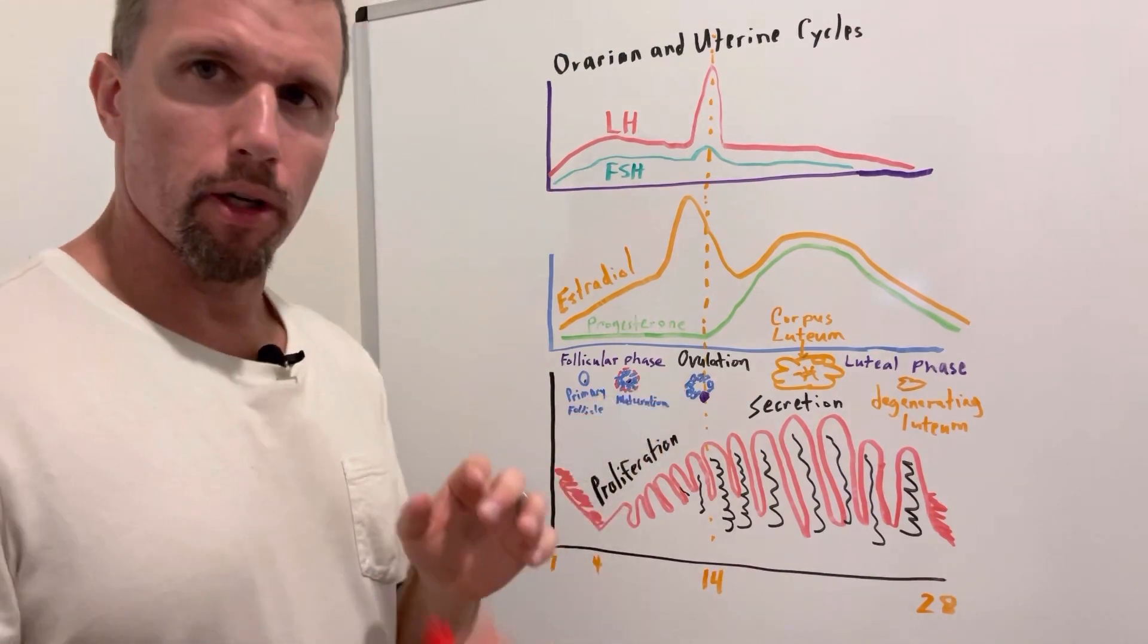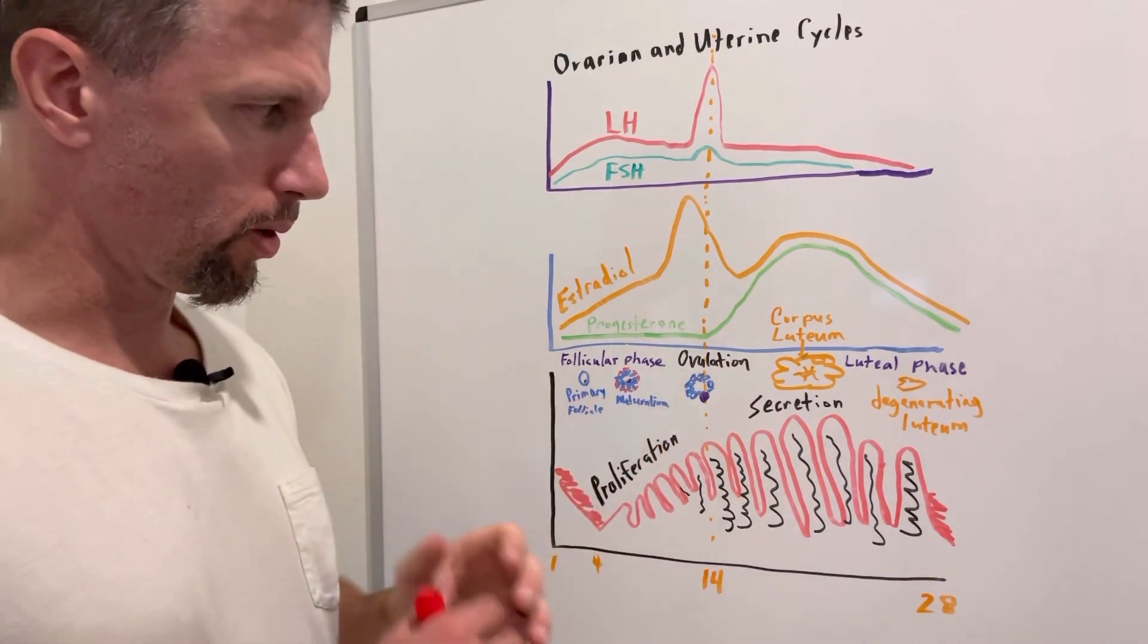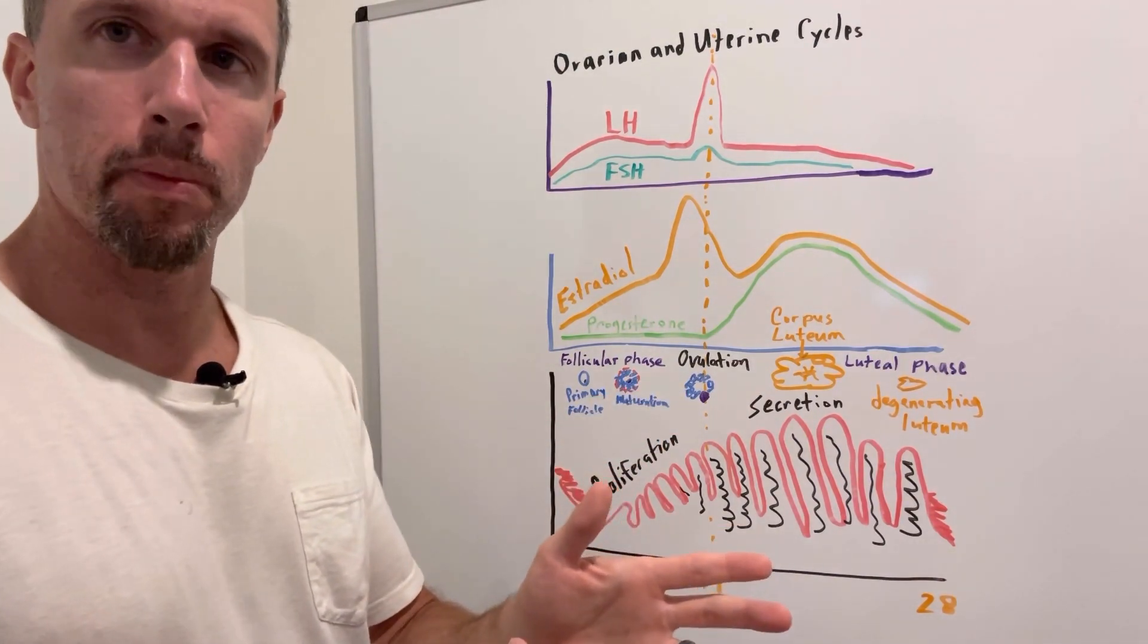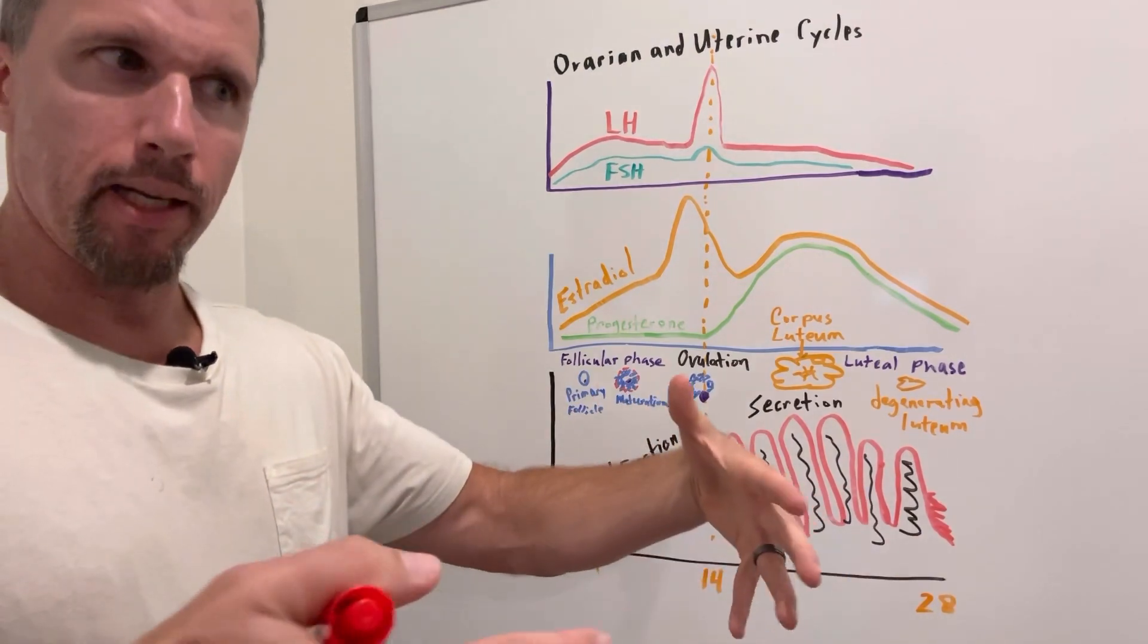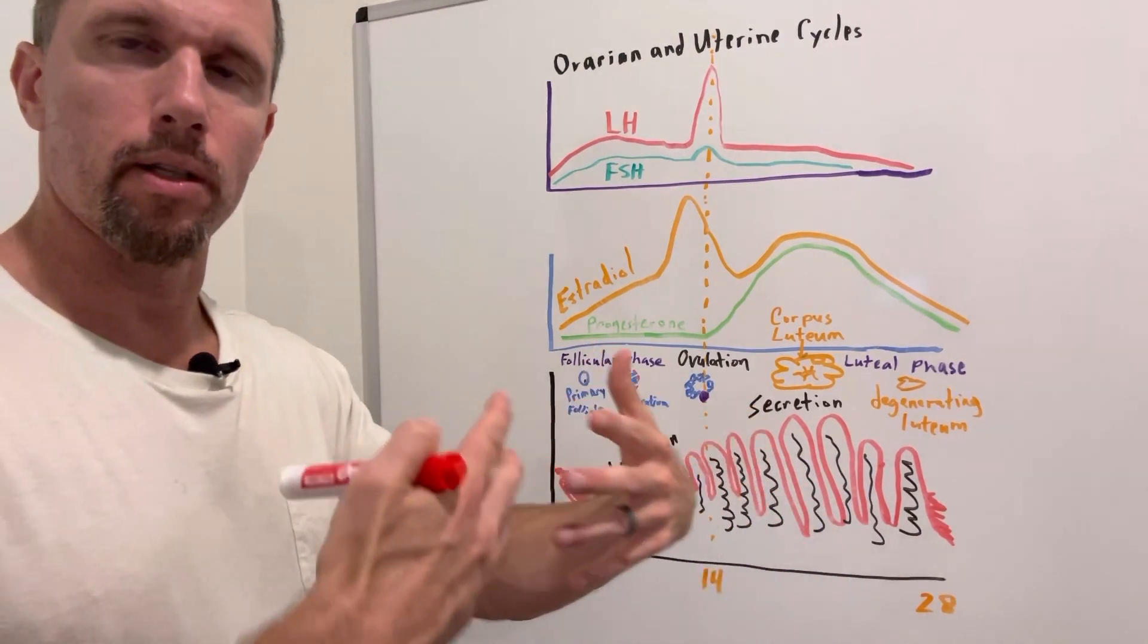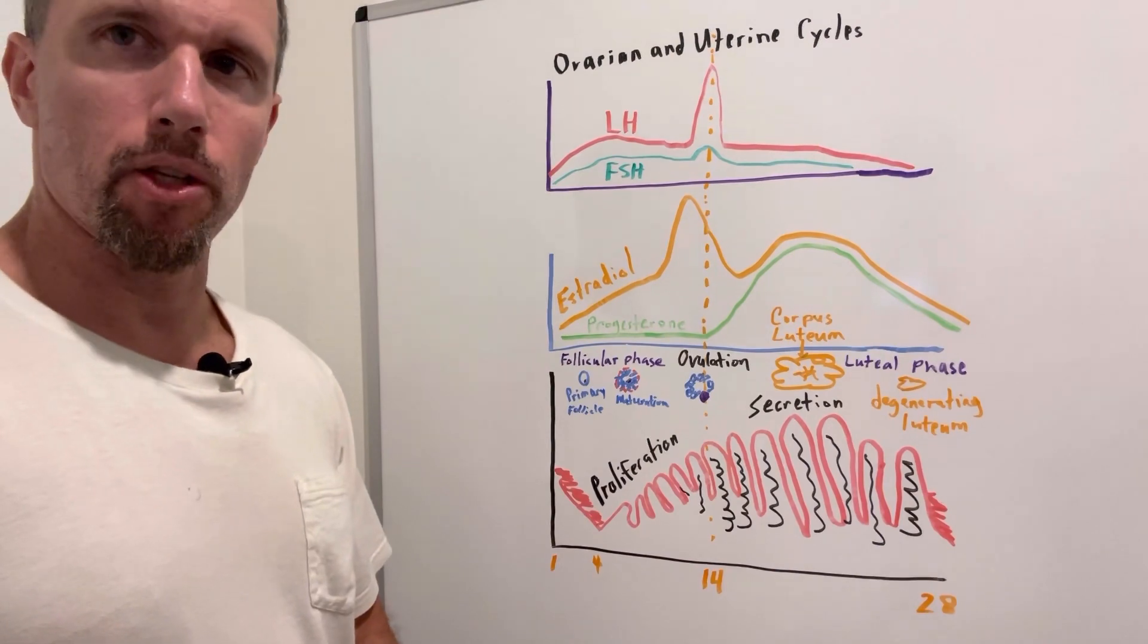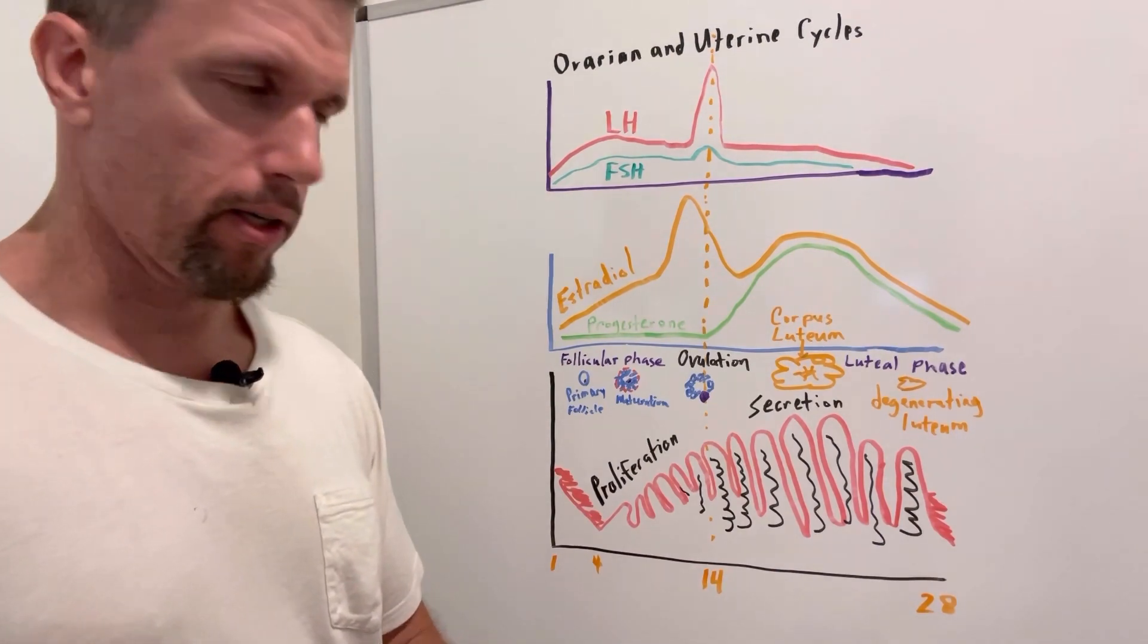And that's going to cause rupture of the ovary in this follicle where it releases the egg, the ovum, and then the fimbriae will kind of escort the ovum into the uterine tubes where fertilization occurs.